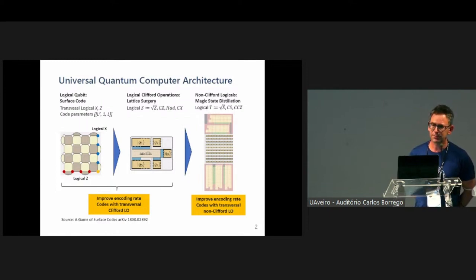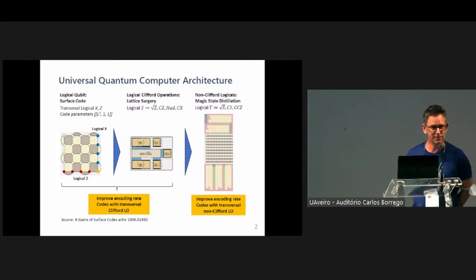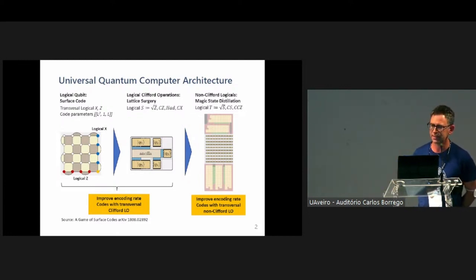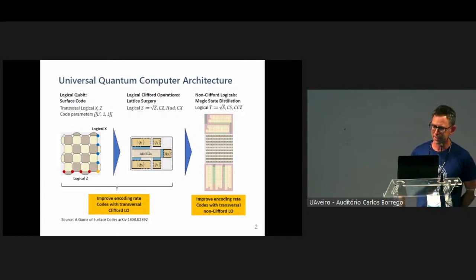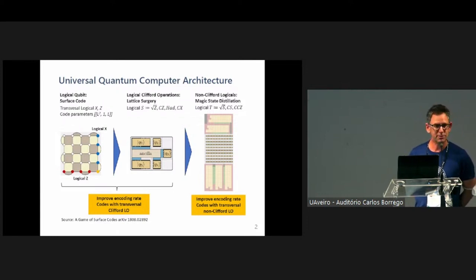If we want universal quantum computation, we need to do something outside the Clifford group in a fault-tolerant way. That's where we have the third picture, talking about logical operations outside the Clifford group. That could include things like a logical T gate — which you can think of as a logical square root of S — a controlled S gate, or a controlled controlled Z gate. Those big things in that picture that look like swimming pools are massive collections of logical qubits called magic state factories, and that's how they implement those next-level gates in a fault-tolerant way.